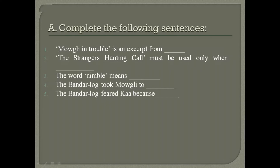Number three is word meaning — the word 'nimble' means — you have to write the meaning of the word nimble. This is also available in the textbook. Number four: the Bandar-log took Mowgli to — where did they take him? You have to write the name of the place. Question number five: the Bandar-log feared Ka because — you need to complete this sentence. The monkeys were very scared of Ka the rock python; there is a reason why, so you write that reason. That will be Exercise A.